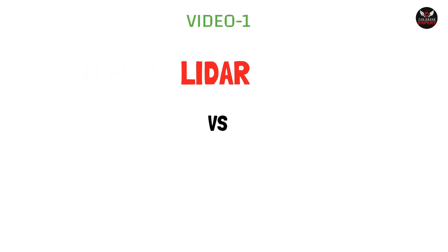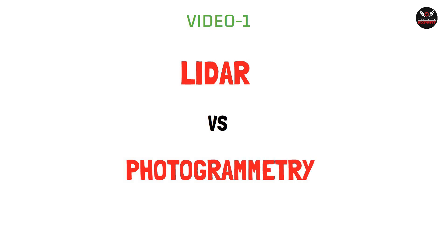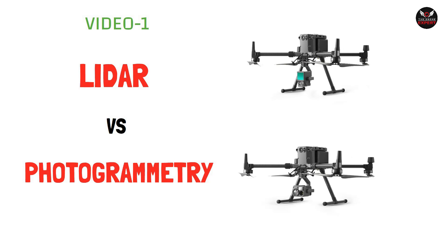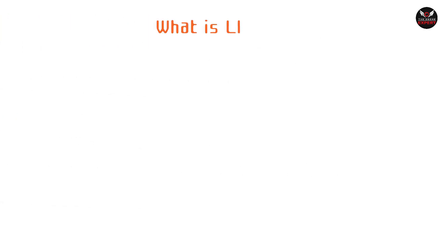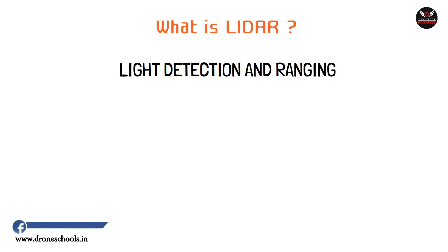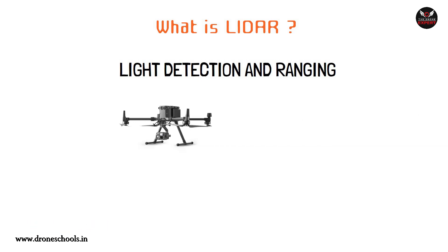Today, in this video, we will be discussing LiDAR mapping and how it differs from photogrammetry. First, let's understand what LiDAR is. The full form of LiDAR is Light Detection and Ranging. By the end of this video, you will easily grasp what this concept is, how it works, and how it is used for mapping. In simple terms, LiDAR is a method that uses laser light to determine the range of an object.